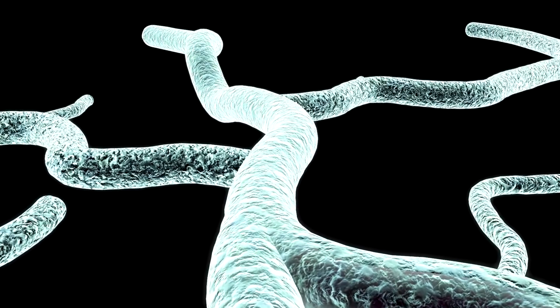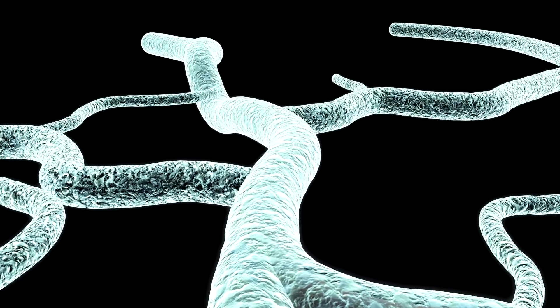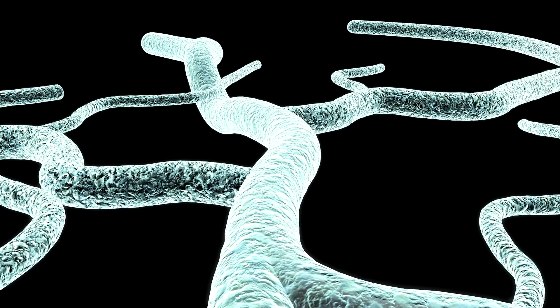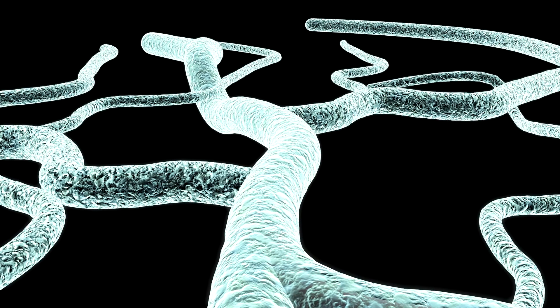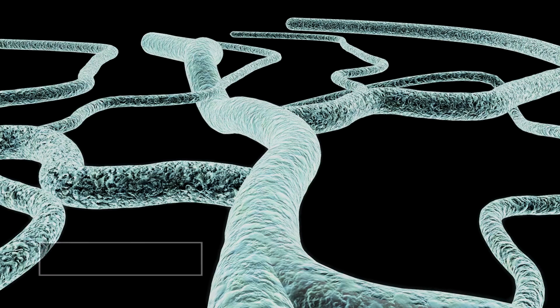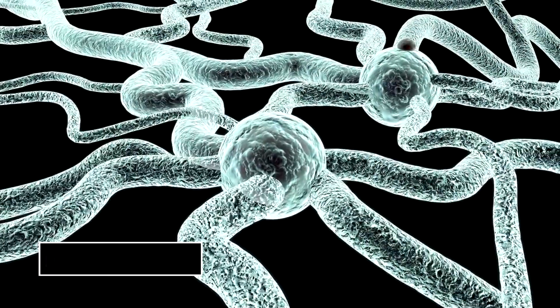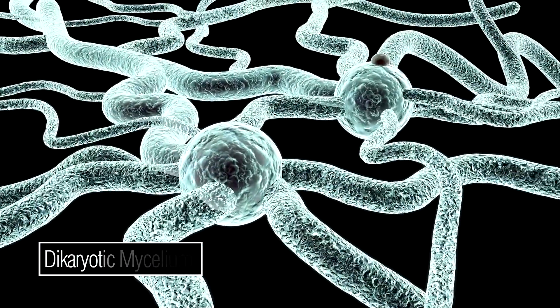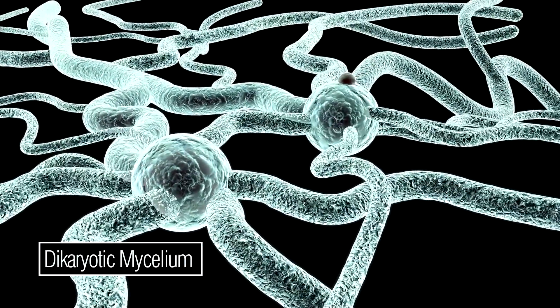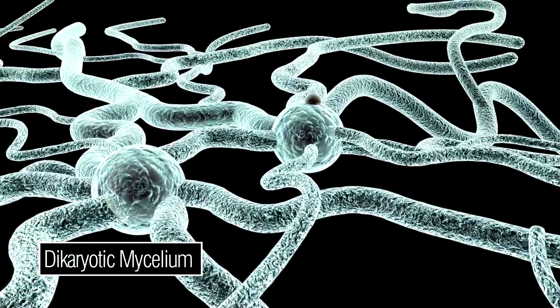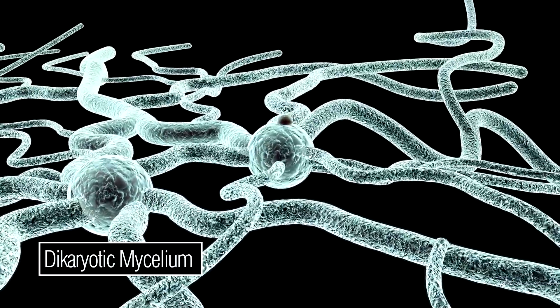Once the two hyphae of opposite mating types join, they form a complete genome. This dikaryotic mycelium is now genetically distinct from its parents.